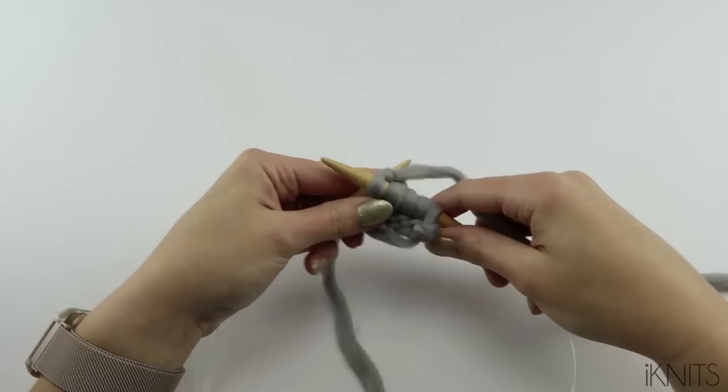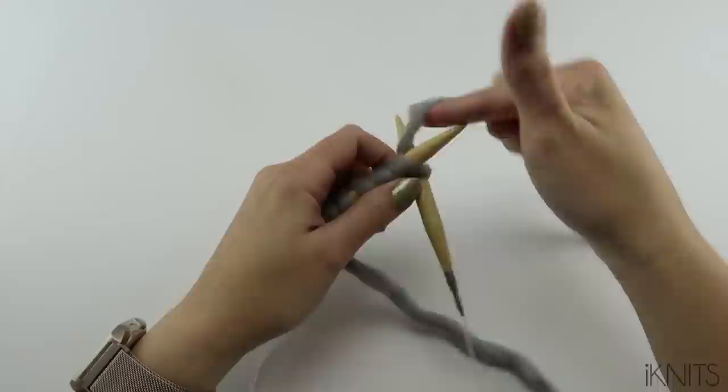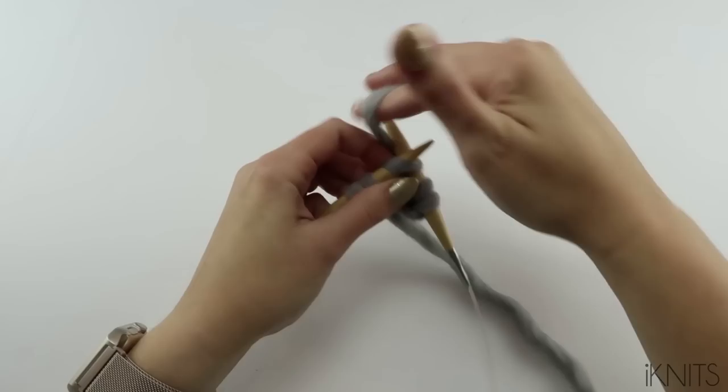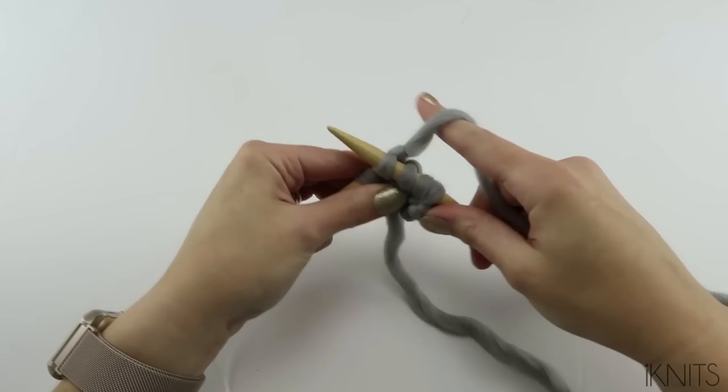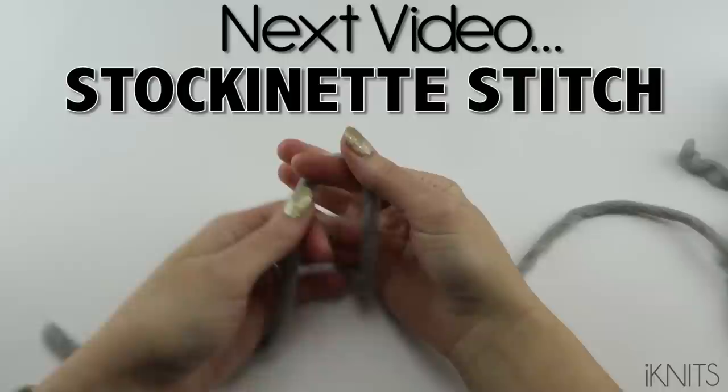I have a link underneath so you can buy the same ones that I have. So we turn our work over. And put our needle from the front to the back. And we knit. Just like straight needles. But if you're doing a really long project, like a blanket, these cable needles are just a lifesaver. The stockinette stitch is where you knit on the right side and you purl on the wrong side.